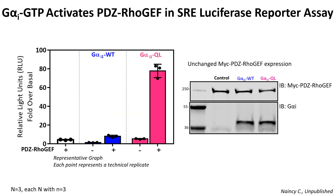We wanted to investigate if G-alpha-I can activate PDZ-RhoGEF in an SRE luciferase reporter assay. The cells which had PDZ-RhoGEF and an active form of G-alpha-I could increase luciferase reporter activity 80-fold, but not inactive G-alpha-I. So this is the first evidence which shows that G-alpha-I can regulate Rho through PDZ-RhoGEF.